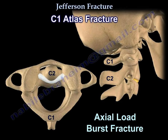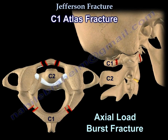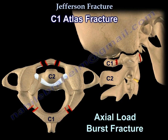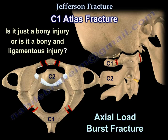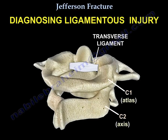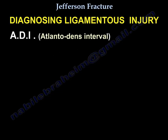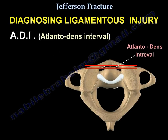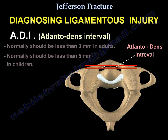Here is a simulation of an axial load creating a burst fracture of C1. The key question is: is it just a bony injury, or a bony and ligamentous injury? To diagnose ligamentous injury, you check the ADI — the atlanto-dens interval — which normally should be less than 3 mm in adults and less than 5 mm in children.